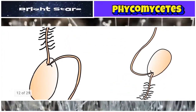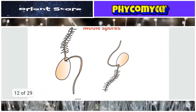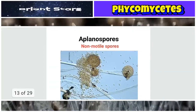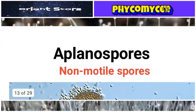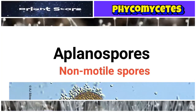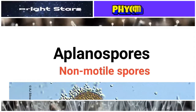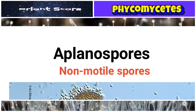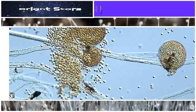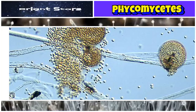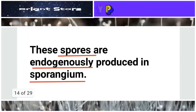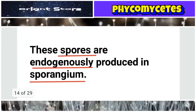Zoospores have flagella — you can see two flagella on each spore — so they swim freely in water. Aplanospores: a- means absent, plano means movement, so aplanospores are non-motile spores with no flagella or cilia. They cannot swim; they are carried by wind and water currents. In this slide you can see spores without flagella — these are aplanospores.